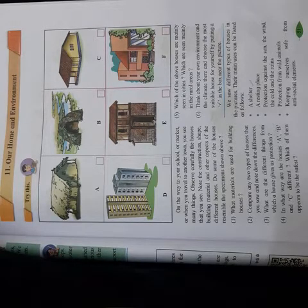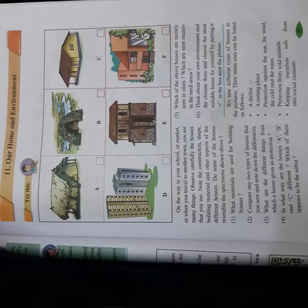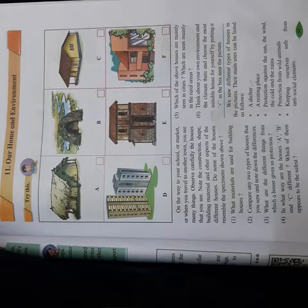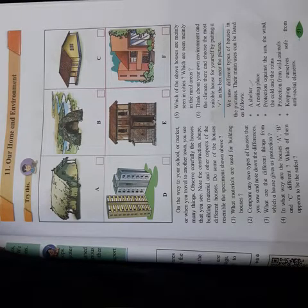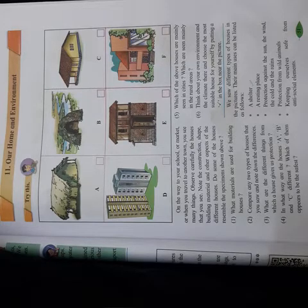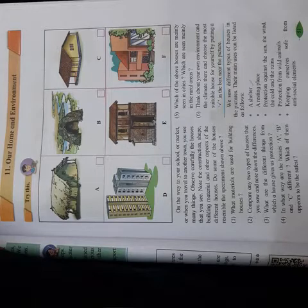Our third question was: what are the different things from which a house gives us protection? We saw different types of houses in the pictures and their main uses are listed below. First, a house gives us shelter — we can stay and relax at home. Our home serves as a resting place. Wherever we go — for a trip, a picnic, or anywhere — when we come back and rest, we feel relaxed at home.